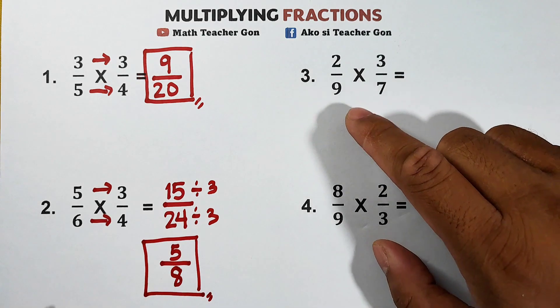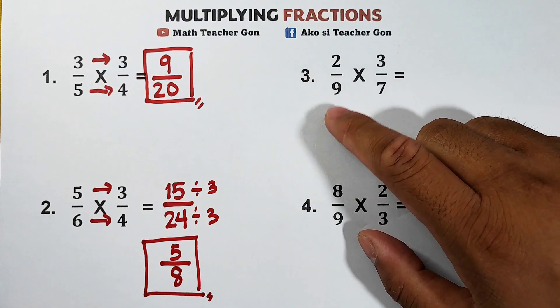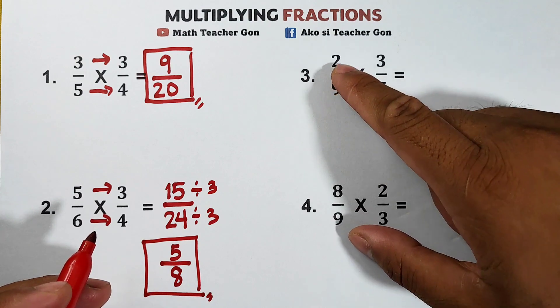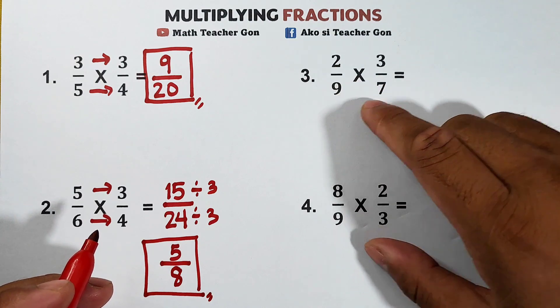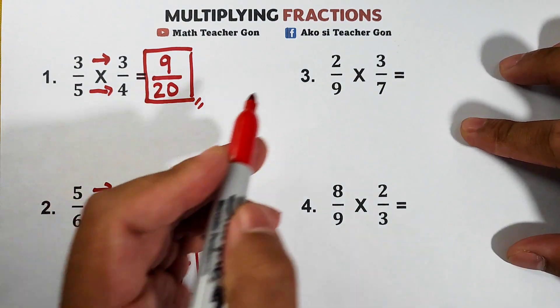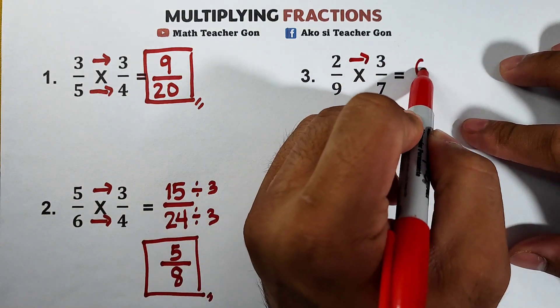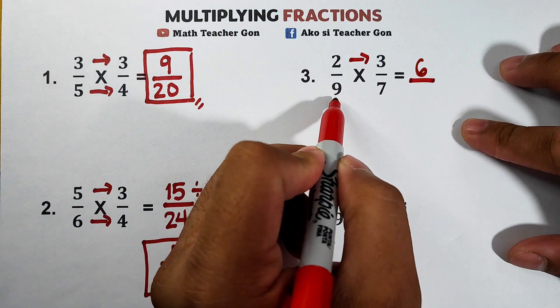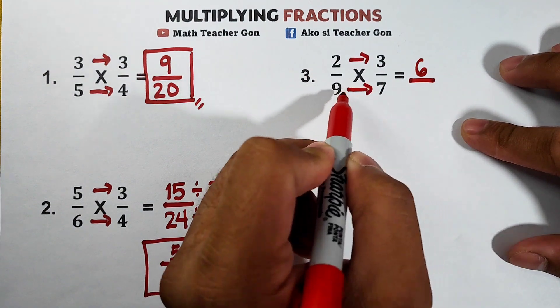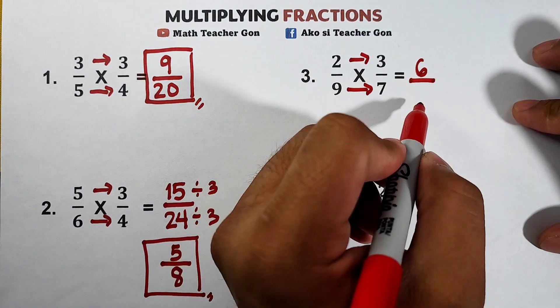Let's continue with item number 3. We have 2 over 9 times 3 over 7. Multiply the numerators. 2 times 3 is 6 over denominators 9 times 7 which is equal to 63.